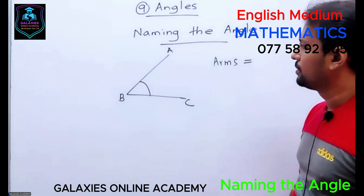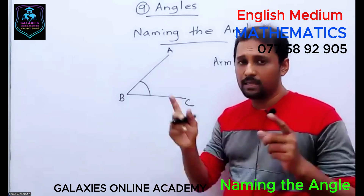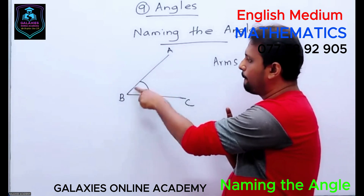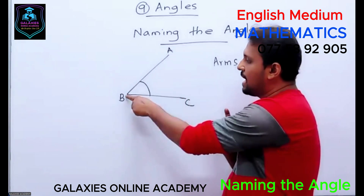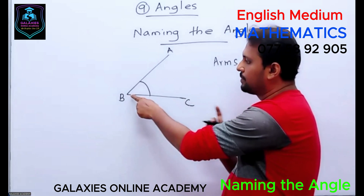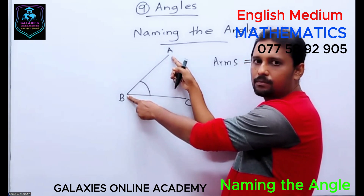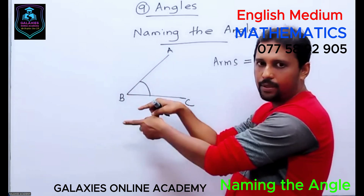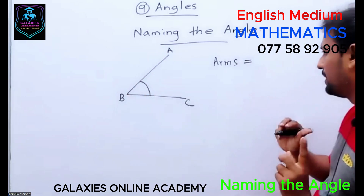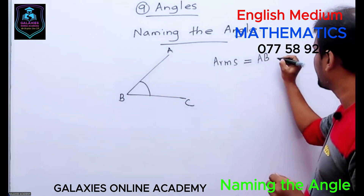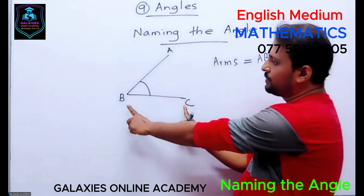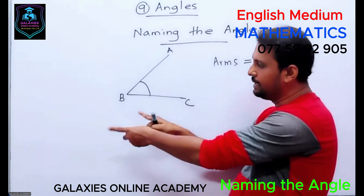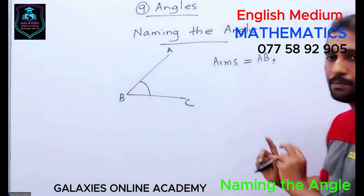Arms mean the straight lines. This is one arm and this is another arm. The name of this arm is AB — you can also say BA. The name of this arm is BC — you can also say CB. I will write them as AB and BC.